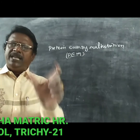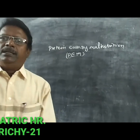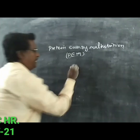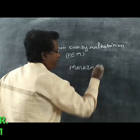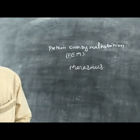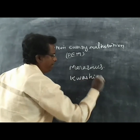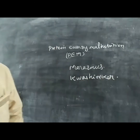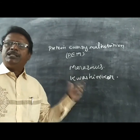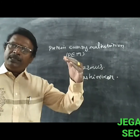Protein is very essential during the early age. The deficiency of protein in early ages produces two kinds of disease: one is called marasmus, and the other is kwashiorkor. These two important diseases occur due to the deficiency of protein during early age and mostly occur in people below the poverty line.